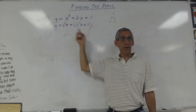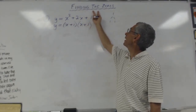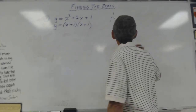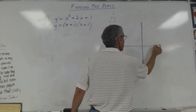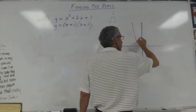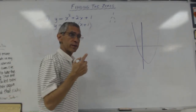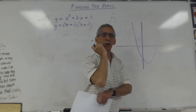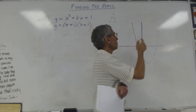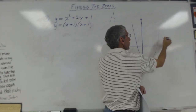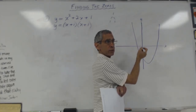Now it looks like the same thing — we did the same process. There's only one thing: the instruction says find the zeros. I want you to think about it for a second. If this is my graph and I have a parabola, and I ask you to find the zeros — what that means is, where is y zero? This is my y axis, this is my x axis.